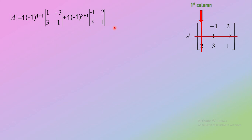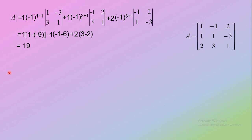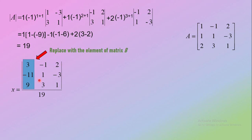Find X. Write the determinant obtained by replacing the elements of matrix B in the first column, and divide by determinant A, which is 19.